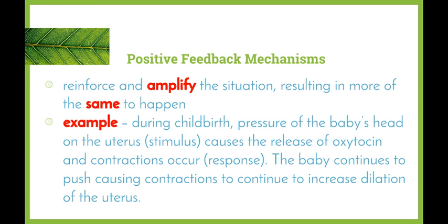In contrast, we also have positive feedback mechanisms. These aren't as common as negative feedback mechanisms, but a positive feedback mechanism is one that reinforces or amplifies the situation, resulting in more of the same happening. A perfect example is during childbirth: as the baby moves into the birth canal, the pressure of the baby's head on the uterus is the stimulus, which releases a chemical called oxytocin and contractions begin to occur as the response. As the baby continues to push down on the opening of the uterus, more contractions take place and lead to the cervix dilating, and then the baby is able to be born.